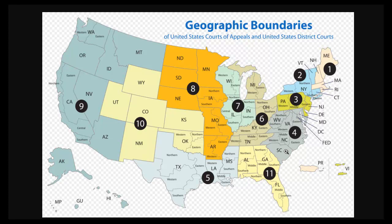Let's say I have a federal court case going on here in North Carolina. I would try it in the middle district here in North Carolina. If I'm not happy with that decision I can appeal to an appellate court for the fourth circuit. If I'm still not happy I can try to appeal again, and my final option is to go to the United States Supreme Court — and that's how that would work.